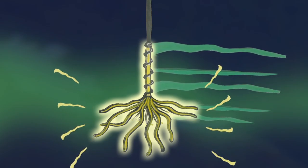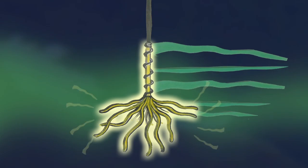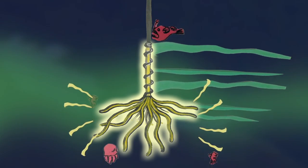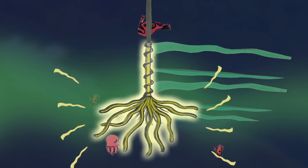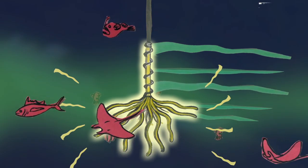For example, kelp. Kelp is one of the fastest growing trees on Earth, growing up to half a meter per day. It's autotrophic, converting nutrients found in the deep into organic material that can sustain life.